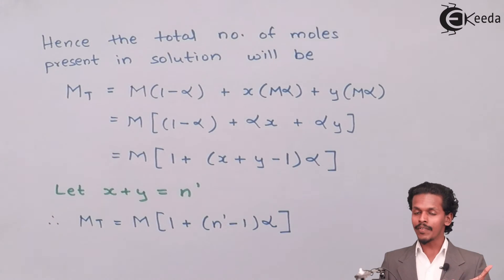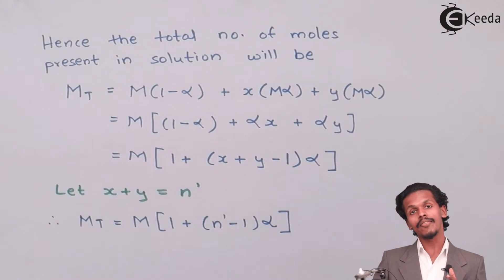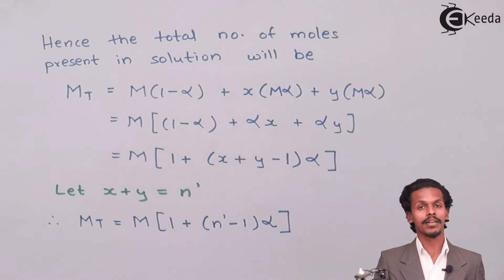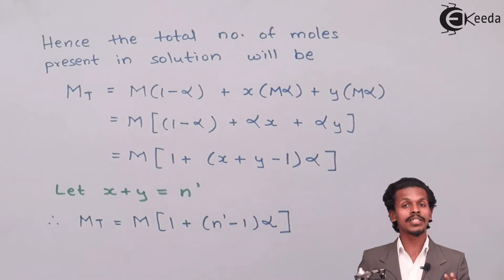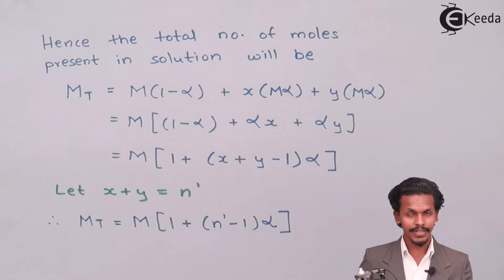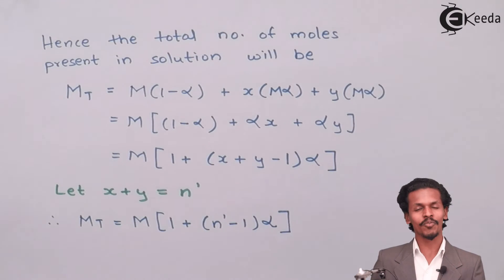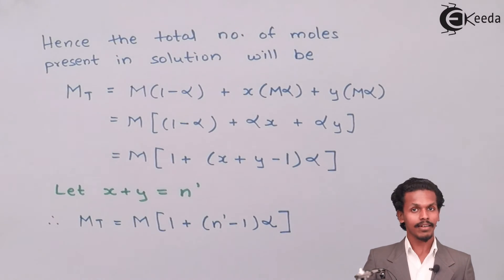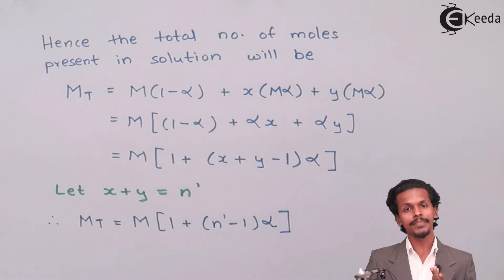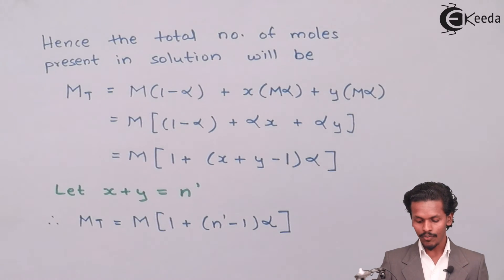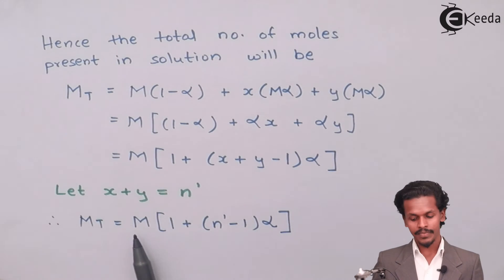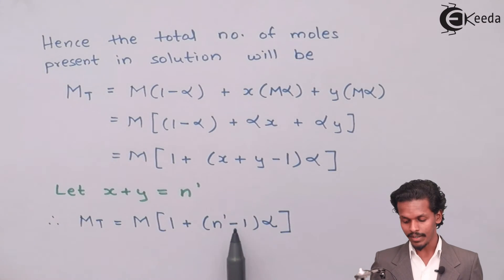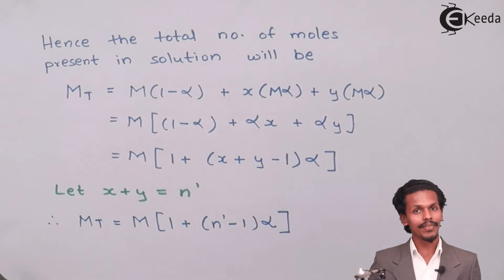For convenience, we convert X + Y into n̄, where X is the number of moles of the cation and Y is the number of moles of the anion produced by the electrolyte. So the total moles M_T = M[1 + (n̄ − 1)·α].